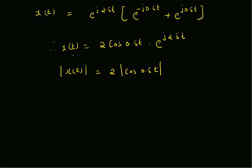So we have x of t equal to two times cos(0.5·t) multiplied by e^(j·2.5·t). Taking the absolute value of the signal, you can clearly see it is the absolute value of a sinusoid with frequency equal to the difference between the two exponents divided by two. Thanks for watching.